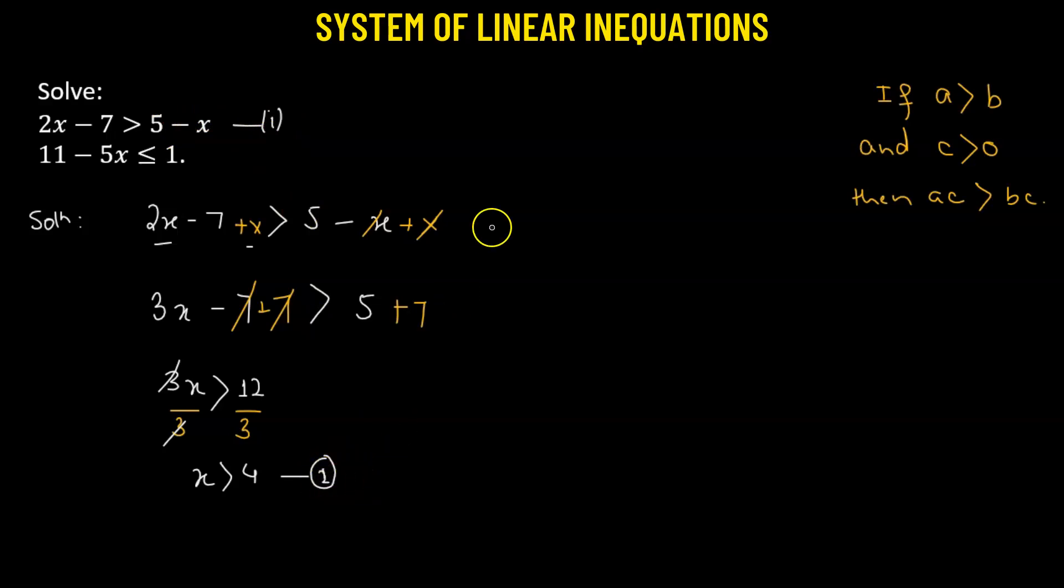Now, solving the second linear inequality, we have 11 - 5x ≤ 1. We will subtract 11 from both sides.